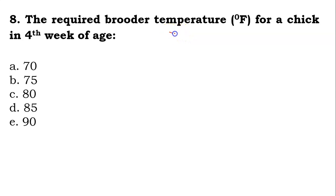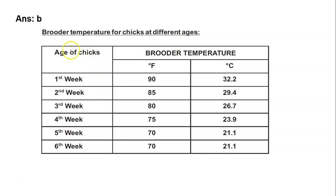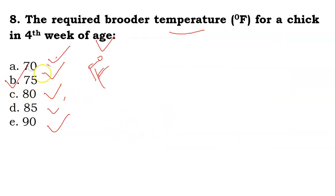The eighth question: the required brooder temperature for a chick in the fourth week of age is 70, 75, 80, 85, or 90°F. Brooder temperatures for chicks at different ages are given in a chart. For the fourth week, the brooder temperature is 75°F. So the answer is B — the required brooder temperature for a chick in the fourth week of age is 75°F.